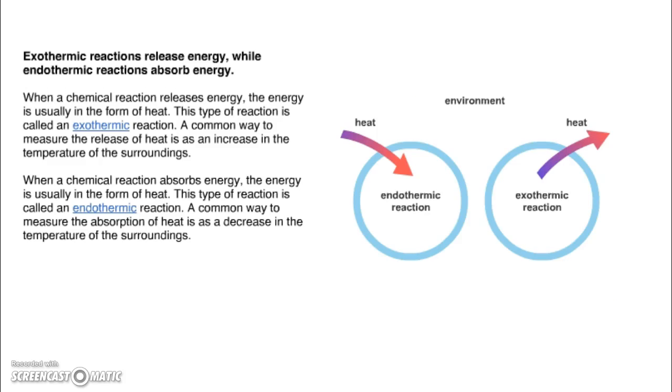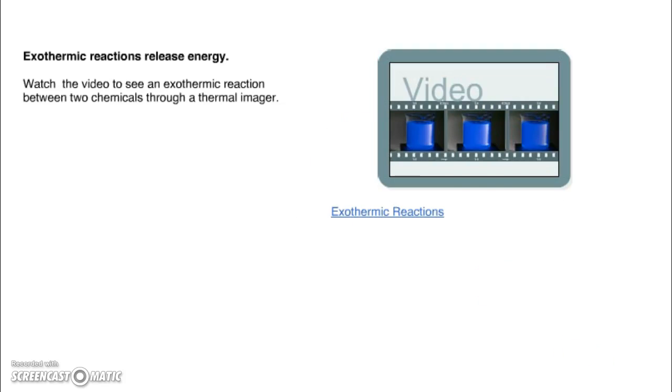Exothermic reactions release energy, while endothermic reactions absorb energy. When a chemical reaction releases energy, the energy is usually in the form of heat. This type of reaction is called exothermic reaction. A common way to measure the release of heat is an increase in the temperature of the surroundings. So think of combustion or a campfire. You sit around the campfire, you can feel the heat spewing out of the fire. It's going into the environment, so that's where it's showing, it's going into the surroundings. When a chemical reaction absorbs energy, the energy is usually in the form of heat. This type of reaction is called an endothermic reaction. A common way to measure the absorption of heat is as a decrease in the temperature of the surroundings. So heat will go into the reaction.